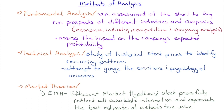Let's look at some methods of analysis of publicly traded securities — and not just any particular securities, maybe the whole market in general. We can perform a fundamental analysis, which is the most common and widely used form: an assessment of the short to long-run prospects of different industries and companies. We can look from the level of the economy, do an economic analysis, an industry analysis, a competitive analysis, or go straight to a company analysis.